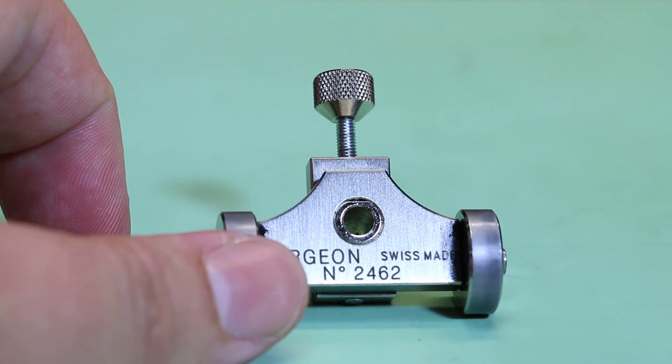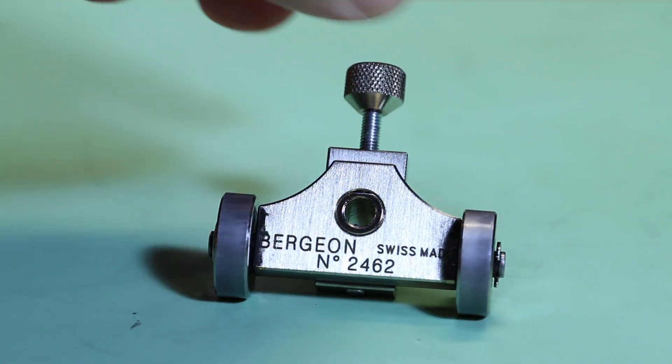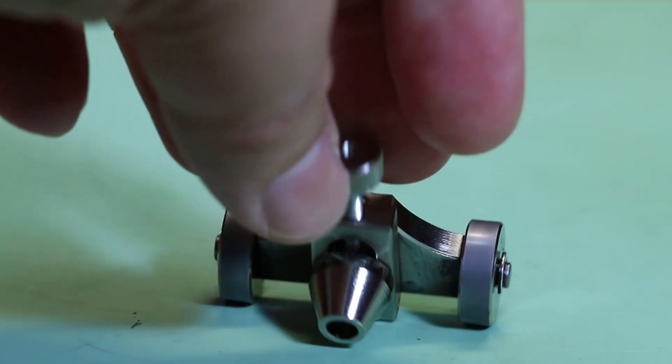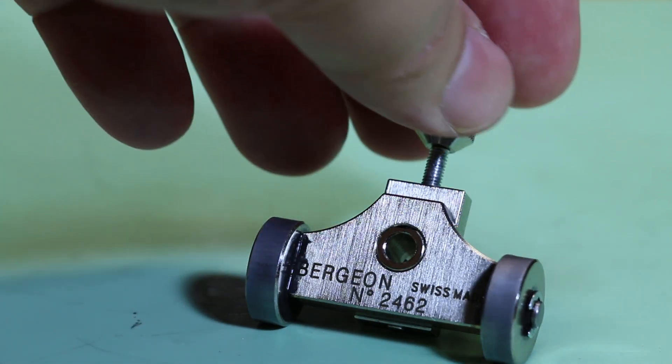There are other models out there, but essentially they all do the same thing, which is locking the graver at a specific angle and ensuring that the whole surface will be in contact with the stone, giving us the correct diamond shape.